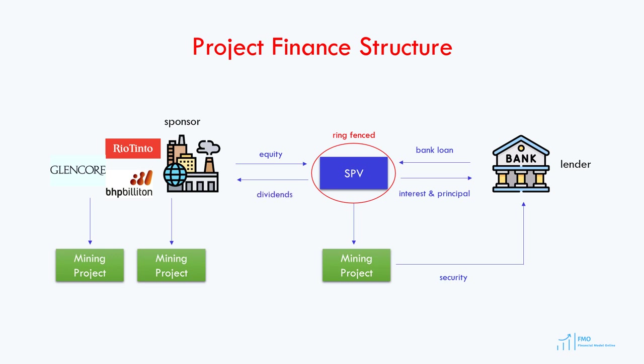If the project does not perform and the cash flow is not sufficient to pay the interest and principal, the lender cannot go after the assets of the sponsor. So, the loan that the lender provided to the SPV will be on a non-recourse basis because the lender will not have recourse to the sponsor. Therefore, the lender can only rely on the cash flows generated by the SPV and will have recourse only to the assets of the SPV. This is how a typical non-recourse lending structure looks like.